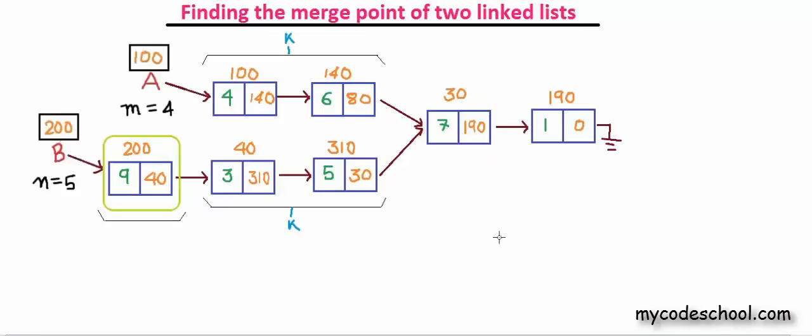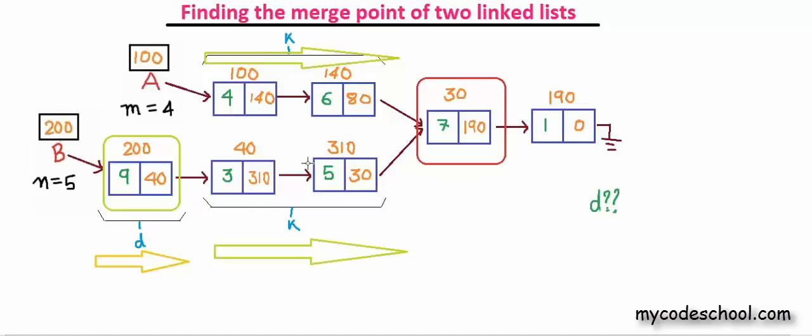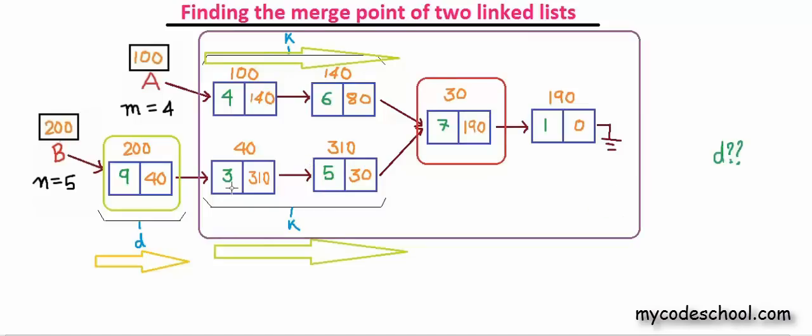So the basic idea is, if we have say D more nodes in linked list B, then what we can do is walk through these D nodes such that both the pointers are equidistant from the merge point and then we can move both the pointers simultaneously until they reach this intersecting node. So how do we calculate this value of D? You can pause the video and think for a while. As we have seen, both the linked lists have the same length after these D nodes.